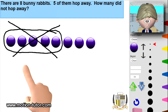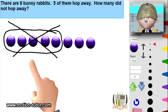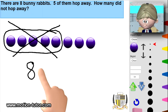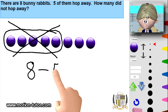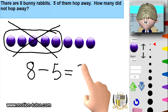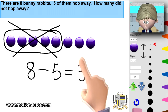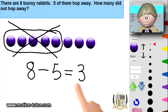So to write it as a subtraction sentence, it's eight minus five, and that is equal to three. We can see it right here.